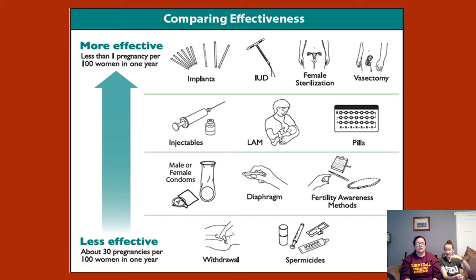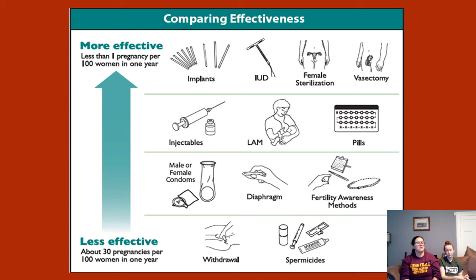You need to know what is least effective going up to most effective. It's worth noting that seeing less than one pregnancy per 100 women in one year, no method of contraception is completely bulletproof. Even with female and male sterilisation, vasectomies sometimes don't take — sometimes the tubes heal back together. It does depend on the individual.